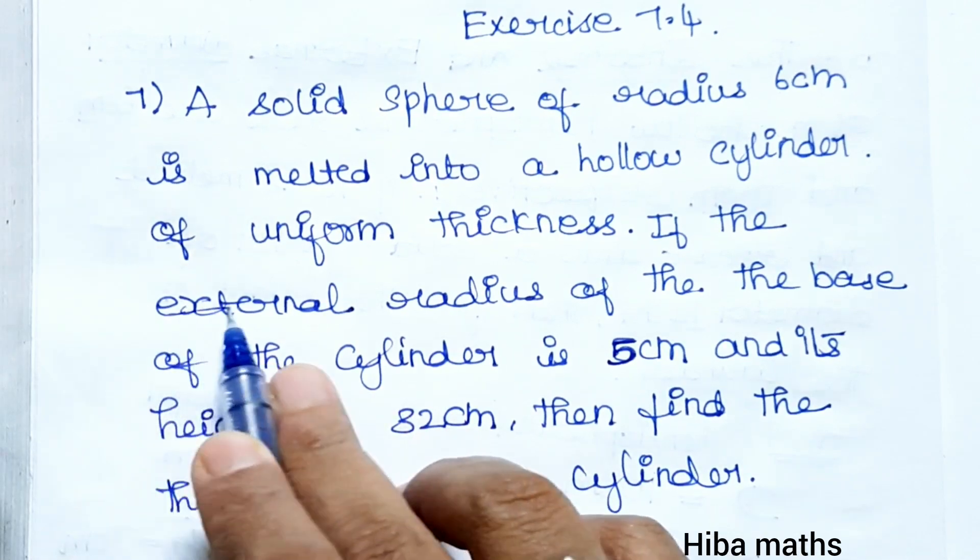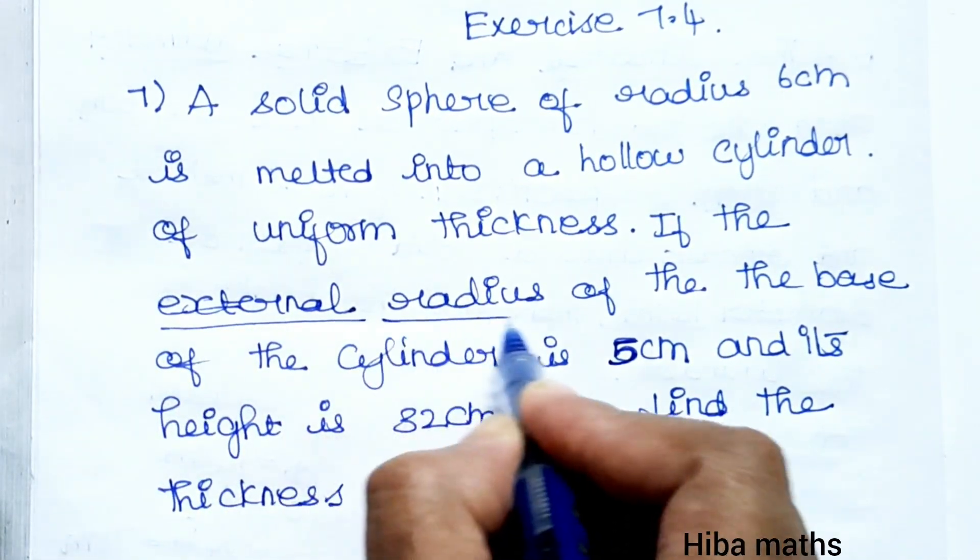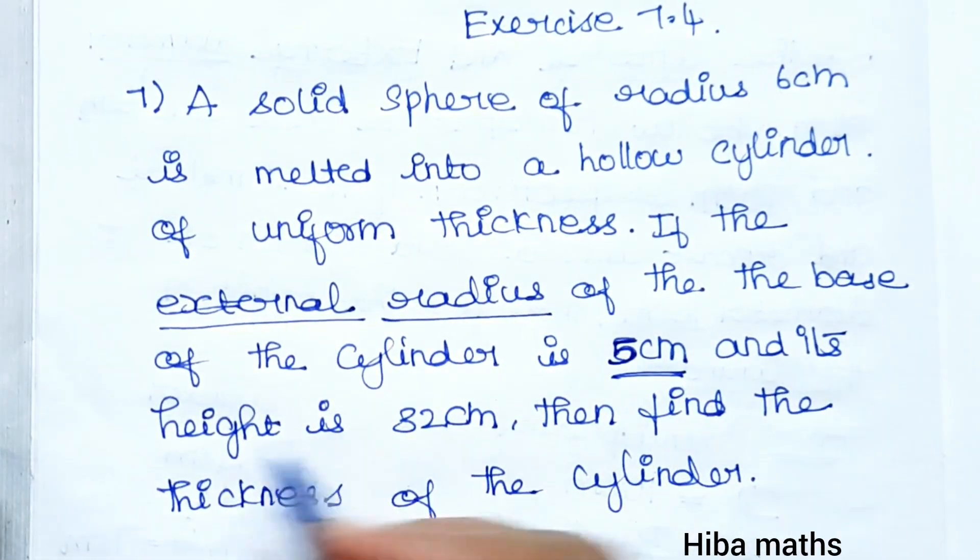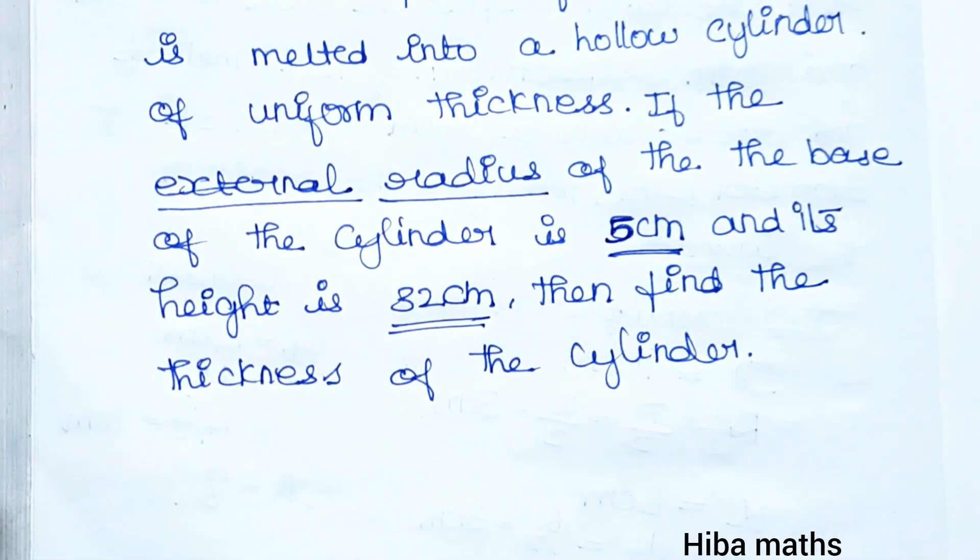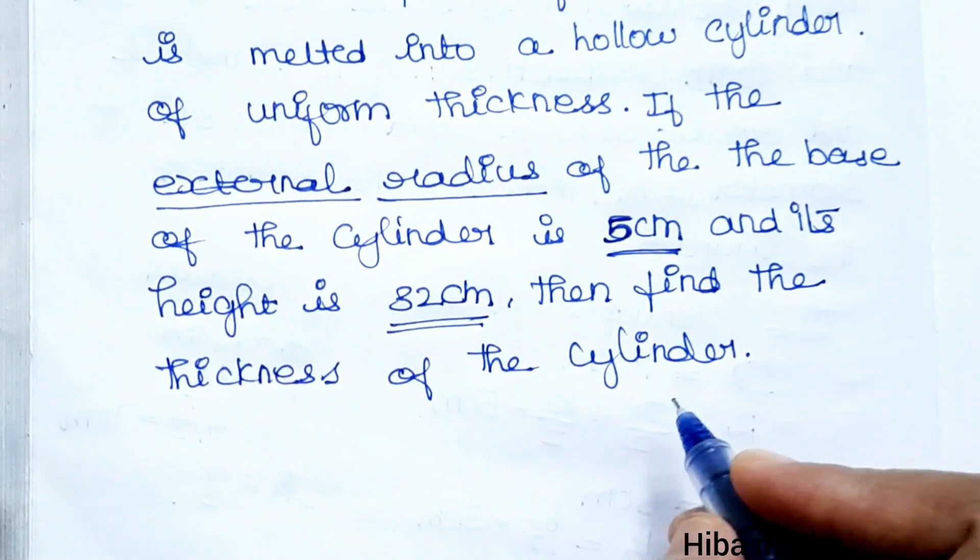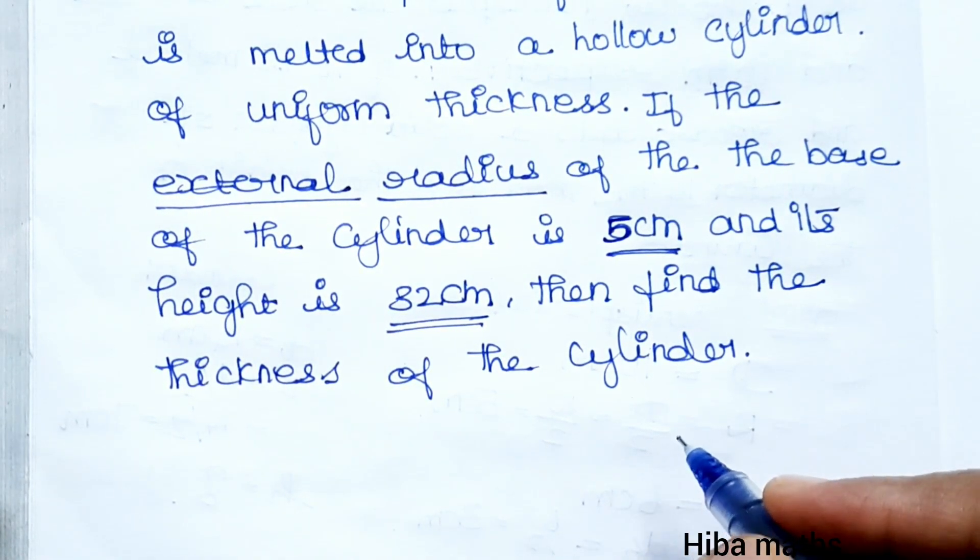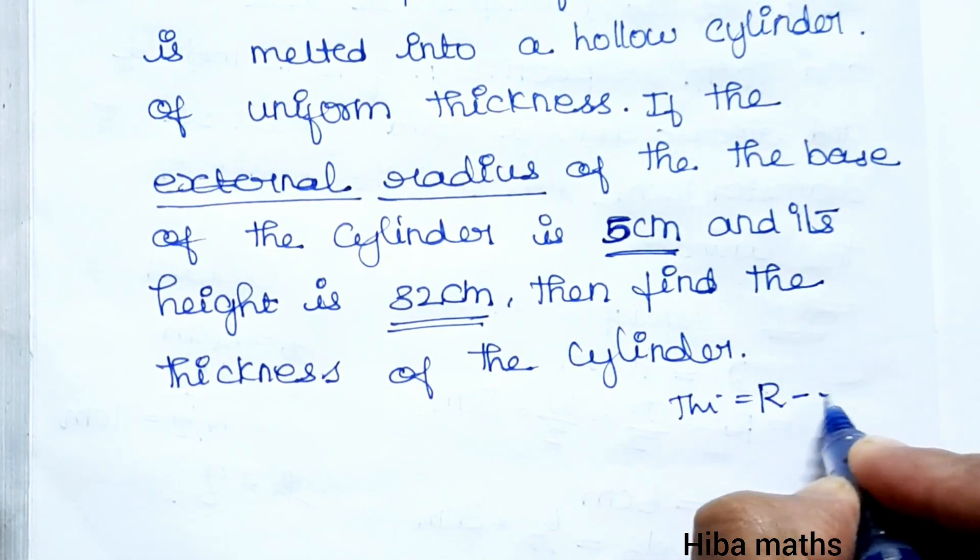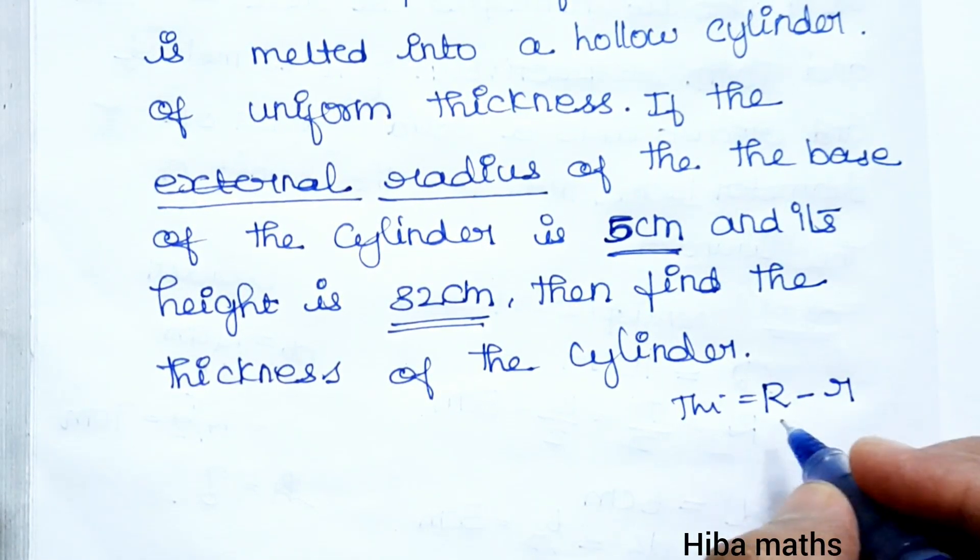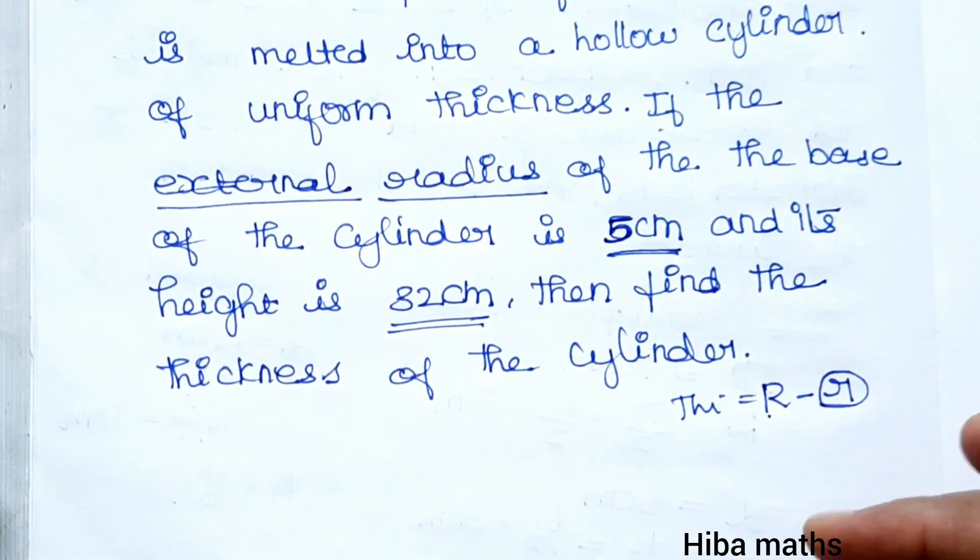External radius is 5 centimeters and its height is 32 centimeters. Then find the thickness of the cylinder. Thickness is external radius minus internal radius, so that's what we have to find.